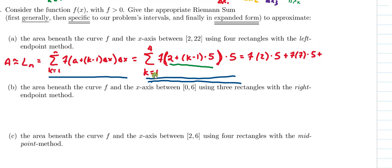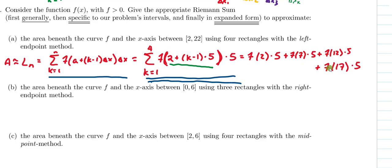When k equals 3, we have 2 plus (3 minus 1) times 5, which is 2 plus 10 = 12, giving f(12) times 5. When k equals 4, the stop value, we have 2 plus (4 minus 1) times 5, which is 2 plus 15 = 17, giving f(17) times 5. Notice that this one compact expression does everything needed — correctly selecting left endpoints of the sub-intervals. That's the beauty of this notation. If we knew what f was, we could continue the computations.